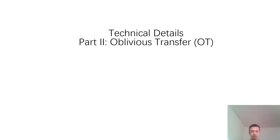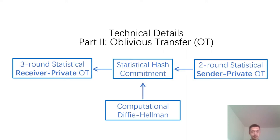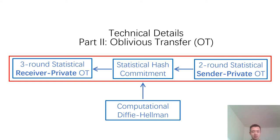For the second part of the technical details, I will talk about oblivious transfer. Here is an overview of our construction. To construct a three-round statistical receiver-private OT, we propose a new notion we call statistical hash commitment. We have two constructions: the first from two-round statistical sender-private OT, and the second from the computational Diffie-Hellman assumption. Due to time constraints, I will only cover the first result.